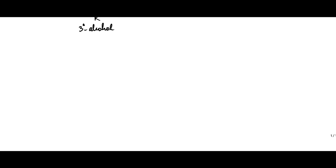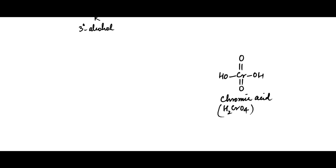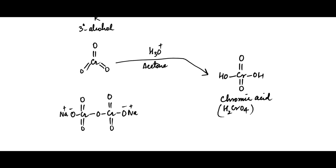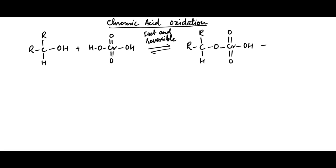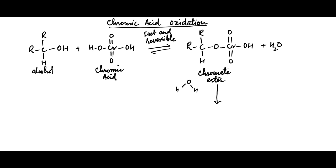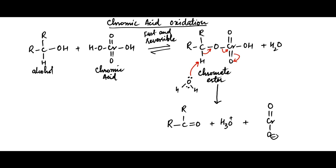A large number of reagents are available for oxidizing primary and secondary alcohols. The most common oxidizing reagent is chromic acid, H2CrO4, which can be formed either from chromium trioxide, CrO3, or from sodium dichromate, Na2Cr2O7, in aqueous acidic solution. The mechanism of oxidation with chromic acid has two main steps. The first step involves formation of a chromate ester. The second step is an E2 process to form a carbon-oxygen pi bond. In the elimination, the carbonyl carbon retains its oxygen atom but loses its hydrogen and gains the second bond to oxygen.